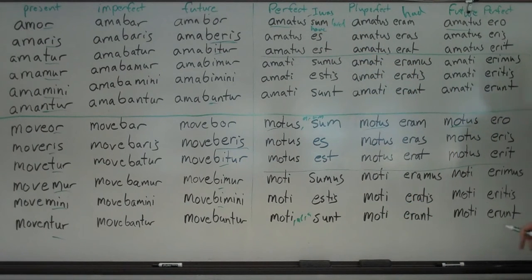Future perfect is the last one, of course, which we do not use that much at all in English anymore. Amatus ero: I will have been loved. So it's ero, eris, erit, erimus, eritis. Instead of going erent here like the active, they go erunt. So that's the big difference between the active versus the passive. And you use both with the fourth principal part. This would be I will have been loved. Make sure you put the English down: you will have been loved, he will have been loved. Same thing with motus ero, I will have been moved. And there we go. If you have any questions, please ask me in class.